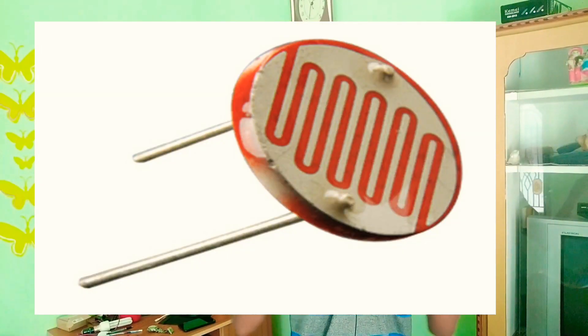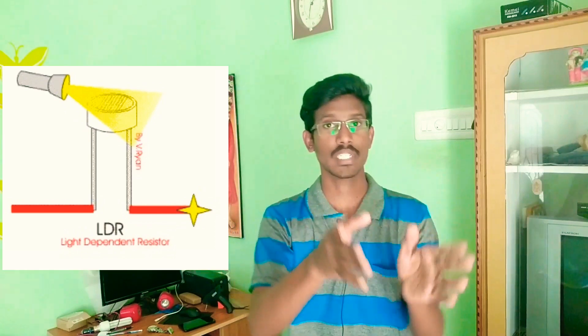At the same time, we will talk about the light-dependent street lights and the program. So first of all, we will talk about the LDR sensor. Guys, if you look at the screen, you will learn about the LDR. The LDR is nothing but one type of resistance — one type of resistor. It is simple.